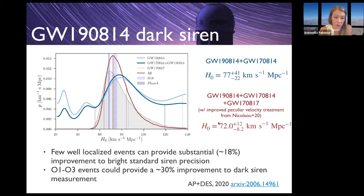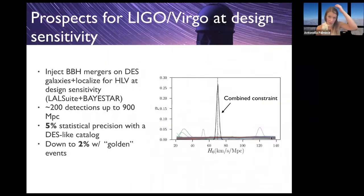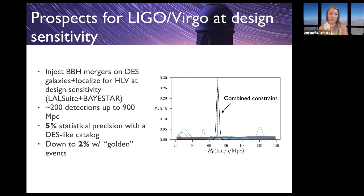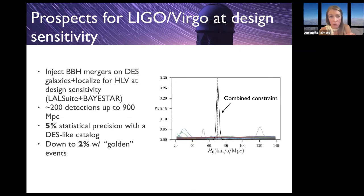Very interesting constraints will come when LIGO and Virgo run at design sensitivity. A simulation of about 200 detections out to 900 Mpc shows single-event posteriors in color and combined posterior in black, demonstrating we can reach two to five percent statistical precision with a DES-like galaxy catalog. This shows how important it will be to have complete galaxy catalogs for the future, when LIGO and Virgo provide even more well-localized events and we can combine hundreds of them.